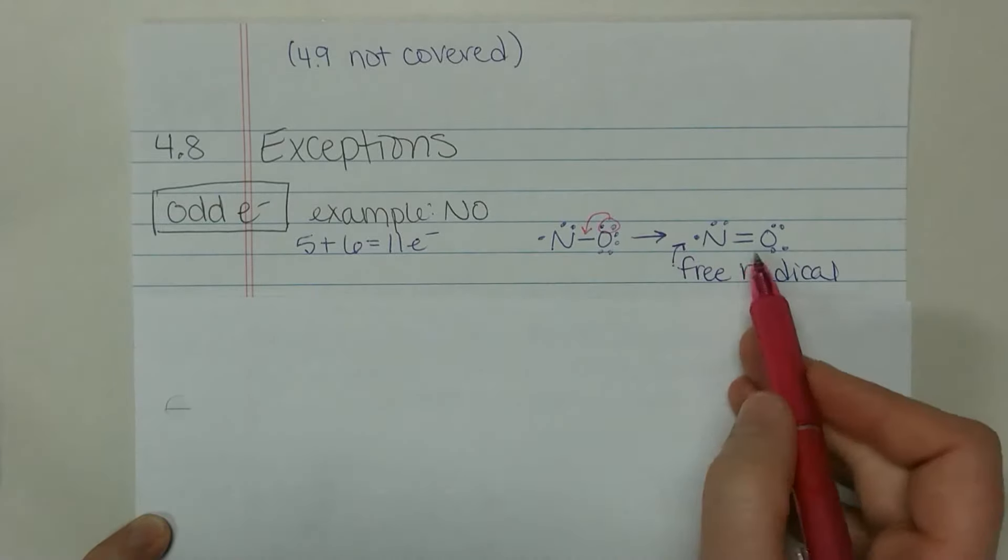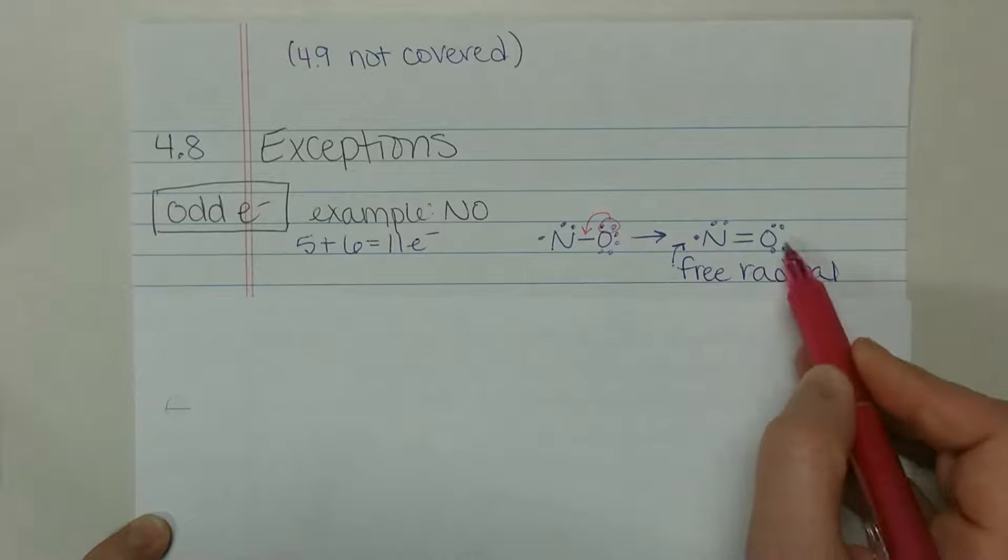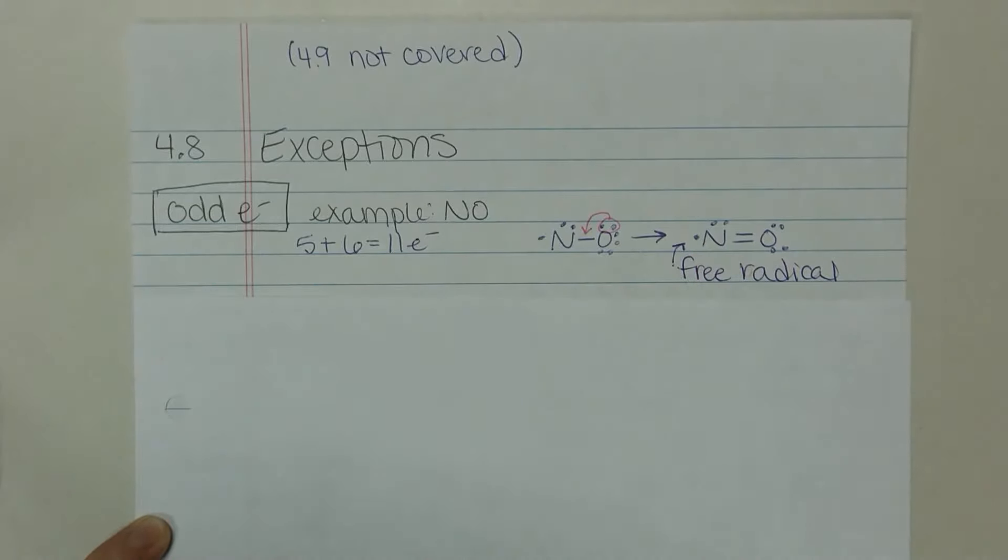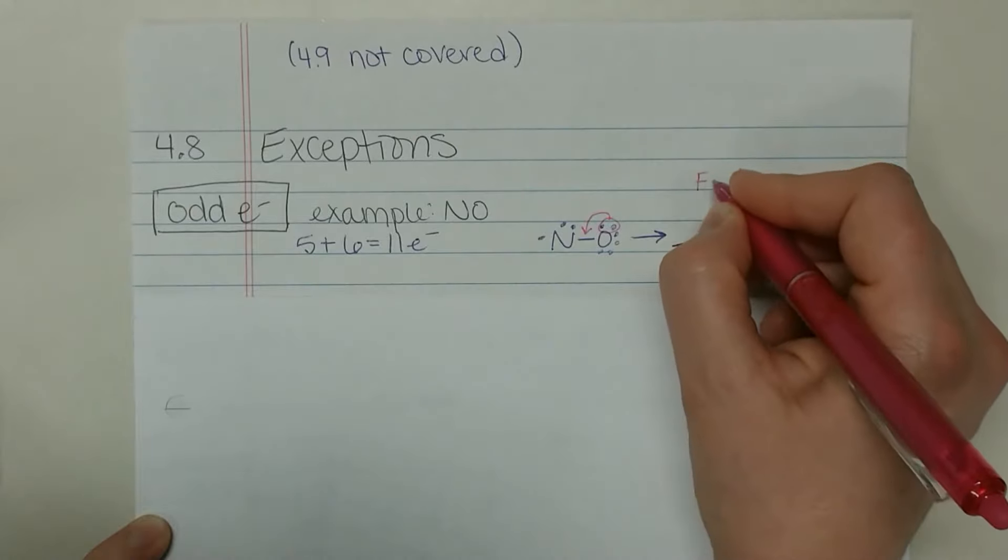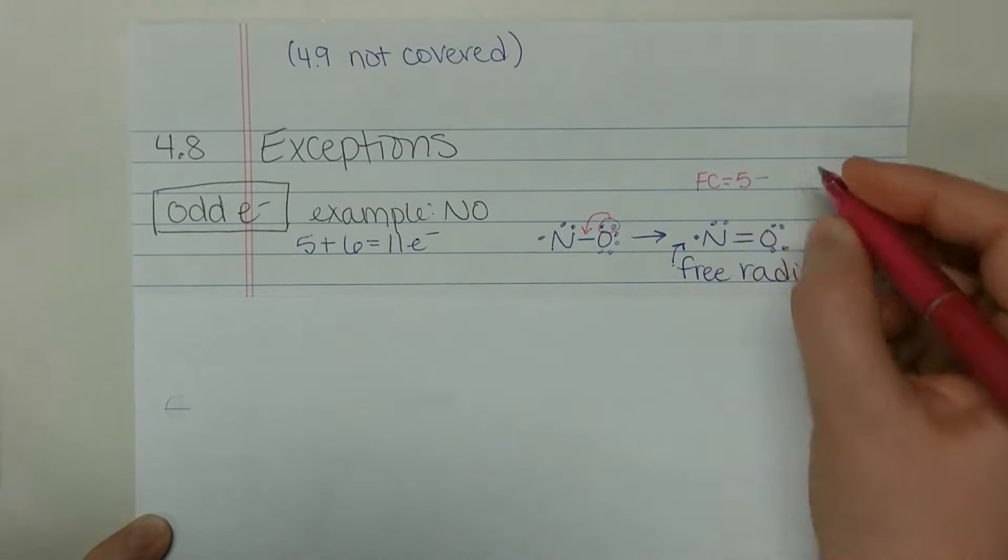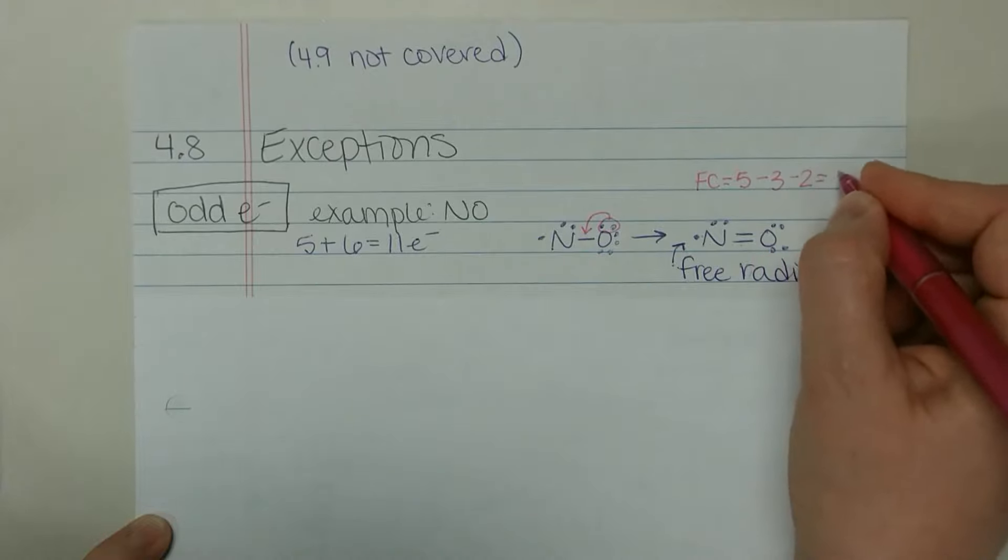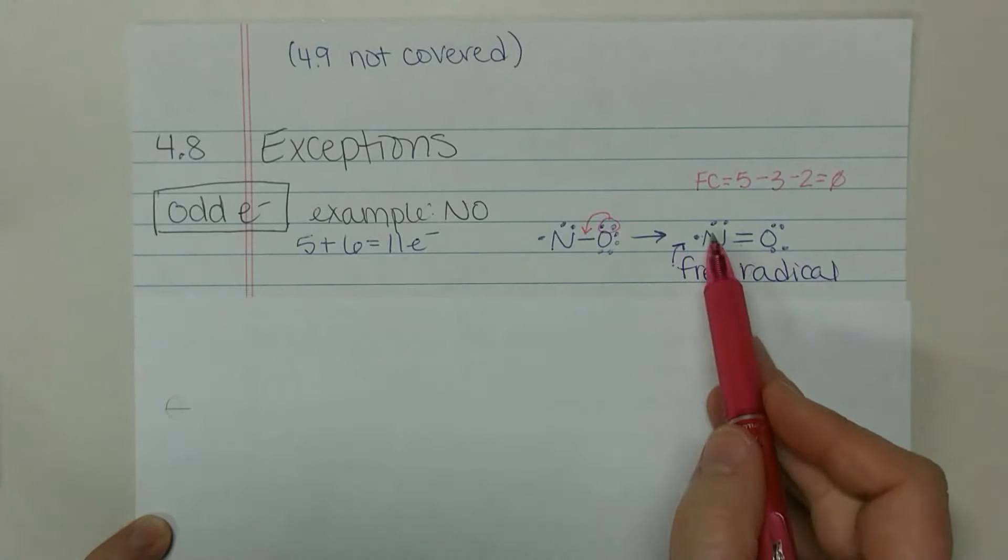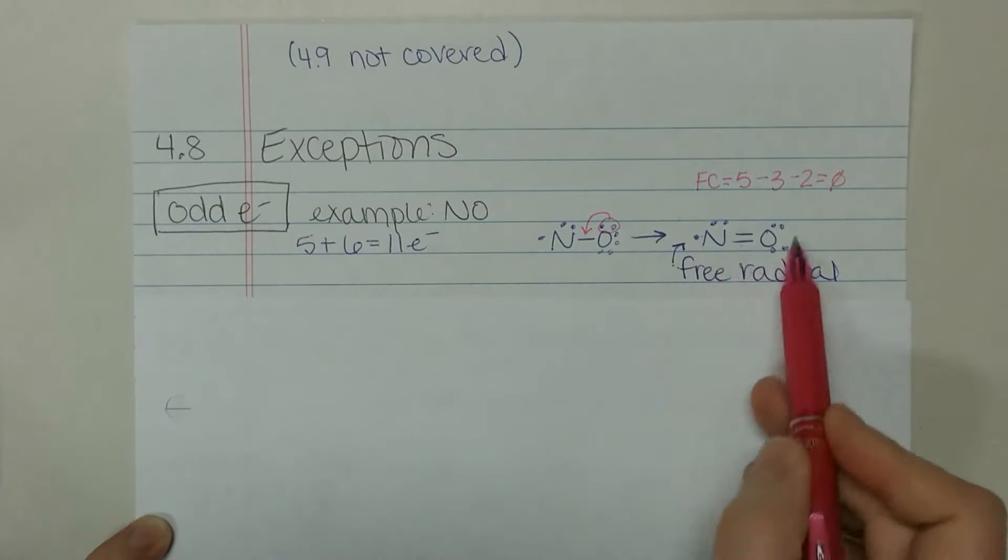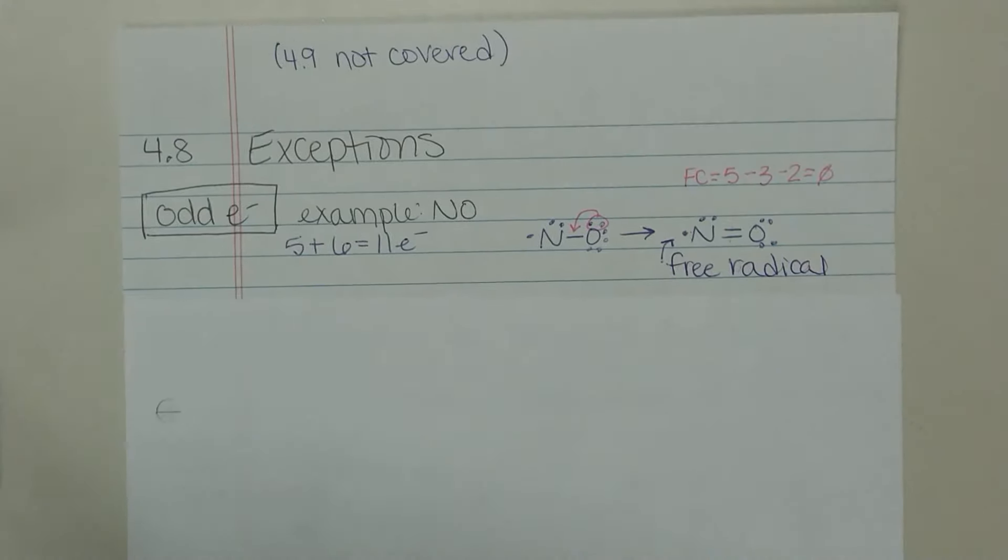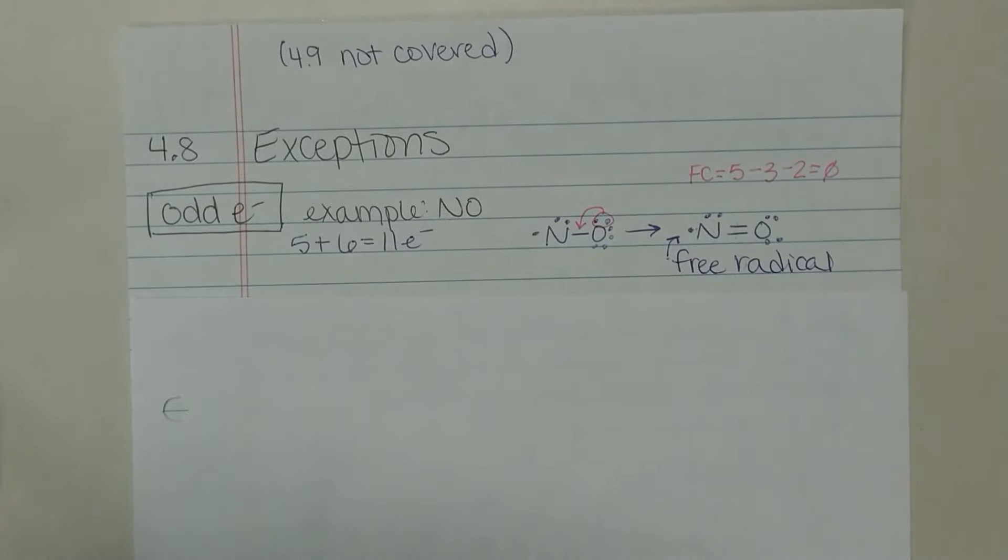This oxygen is happy. It has two four six eight electrons. Nitrogen here has two four six seven electrons. Its formal charge, however: we have five valence electrons minus one two three electrons and two bonds of zero. So this nitrogen is actually happy and okay and stable in this bond even though it has an unpaired electron. That unpaired electron is called a free radical and there's lots of different chemistry that can happen there that you'll get more experience in as you move on in your chemical careers.